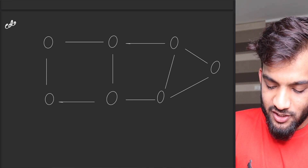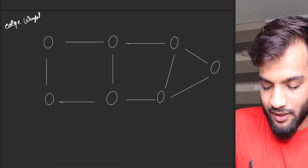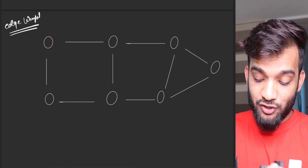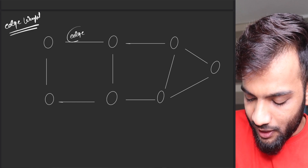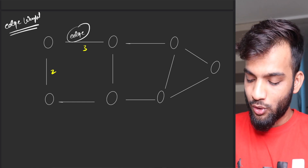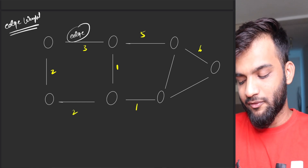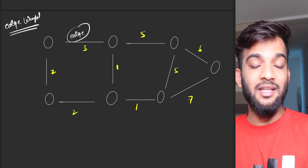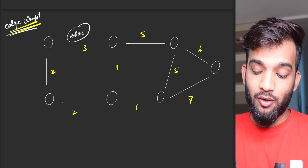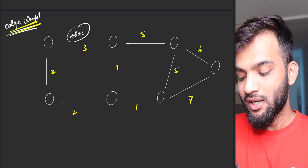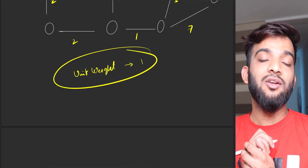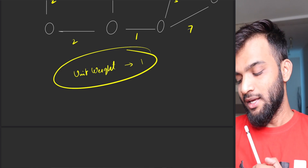The last term we'll learn is edge weight. Every edge can have a weight. In problems, they might say this edge has weight 3, this one has weight 2, and so on — they can assign any weights to any edges. This is called edge weight. If weights are not assigned, we always assume unit weight, which is 1.